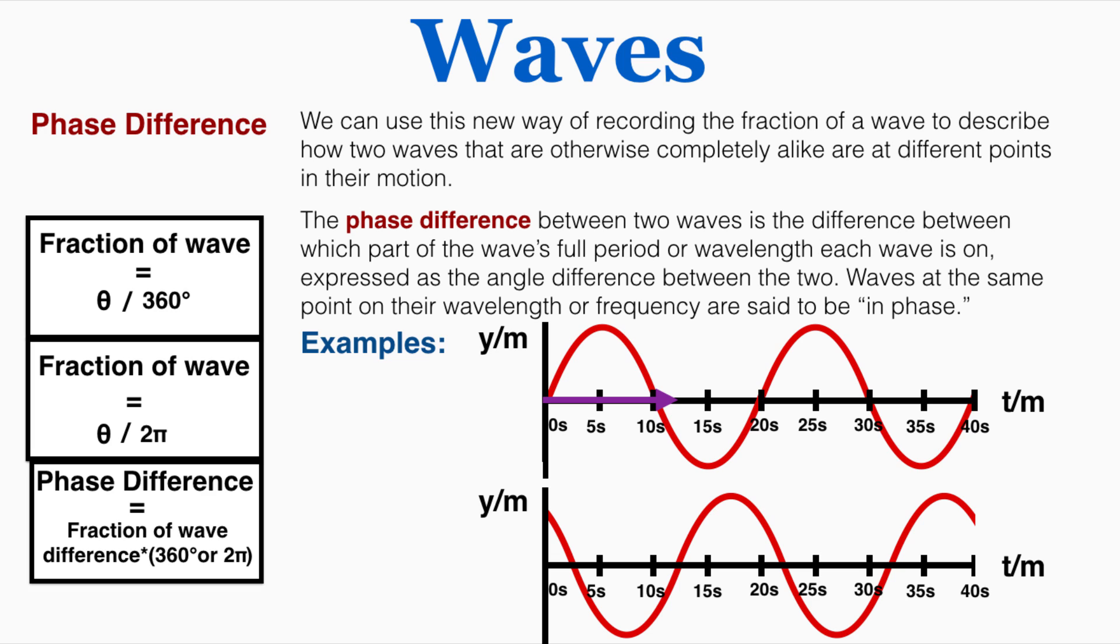Here I can see that the wave is shifted by this much which is 5 eighths of the wave using that bottom equation for phase difference. 5 eighths times 360 or 2 pi gets me a phase difference of 225 degrees or 5 pi over 4.